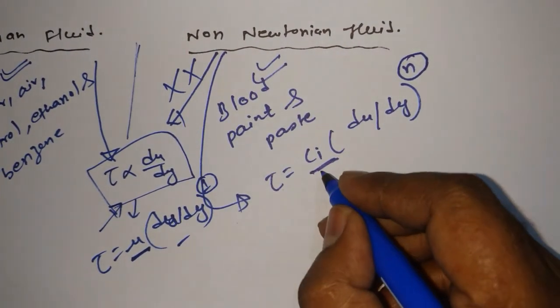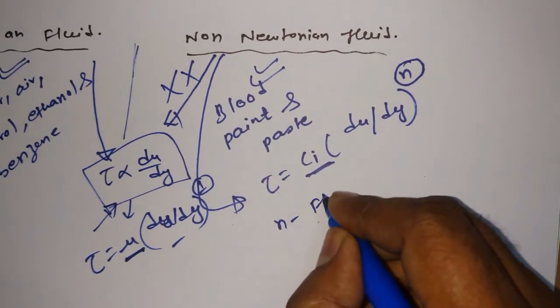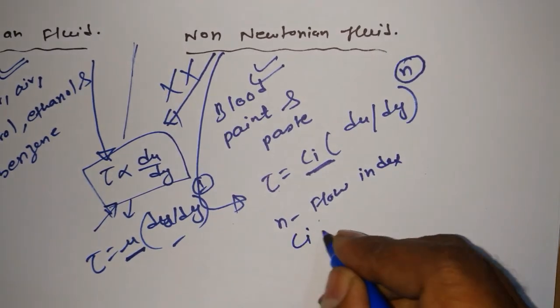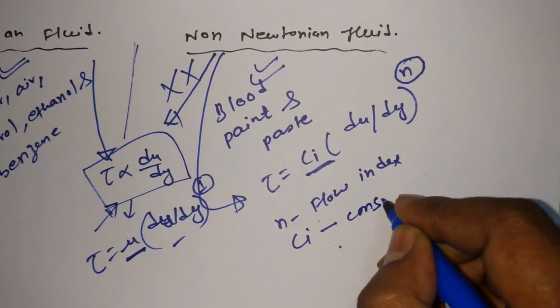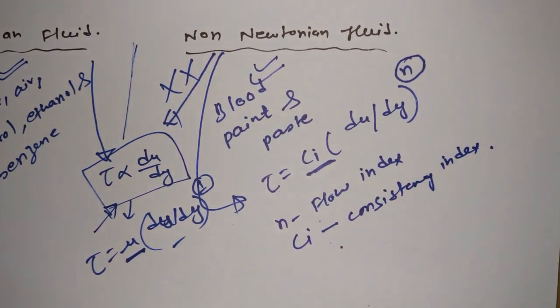Now, we must know what is Ci and what is n. n is known as flow index and Ci is known as consistency index.